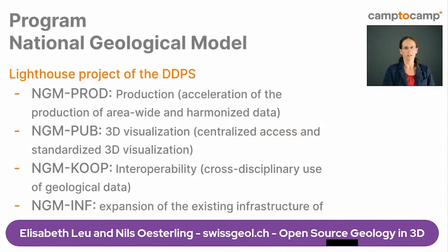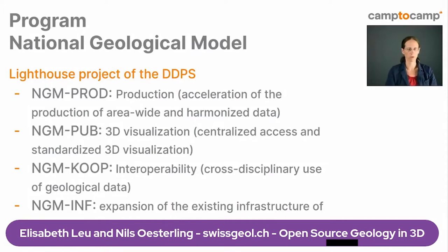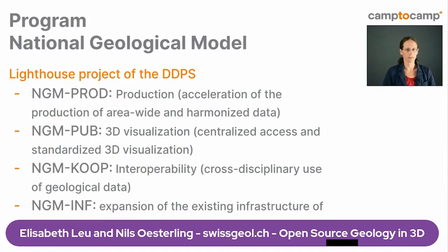Some data is only mapped relative to the ground surface, and information is sometimes not locatable in 3D. Based on this situation, the program NGM was started in Switzerland, and due to its high economic benefit, it became a so-called lighthouse project for the public and administration. The national geological model program is divided into four different projects: data production, publication and visualization, cooperating and interoperability, and expansion of the existing geological 3D model infrastructure.